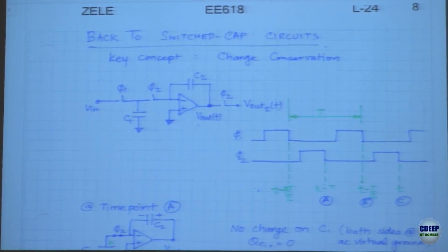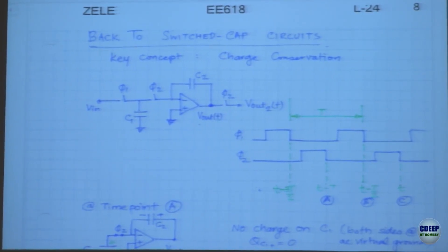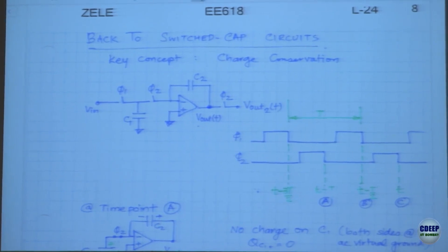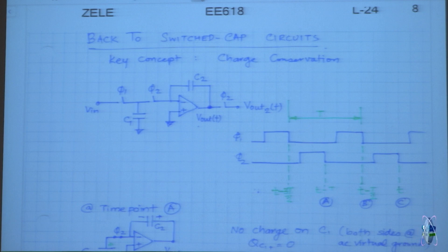Everyone knows that charge conservation is what happens here, not energy conservation. The reason it's not energy conservation is because whenever the switch closes or opens, there is some energy lost due to sparks, or if the switch has a resistance, there will be heat due to I²R dissipation. In this particular case, we took a simple example where phi1 and phi2 are non-overlapping clocks. It's really important to have non-overlapping clocks in switch caps.